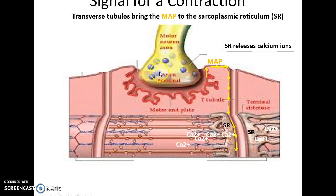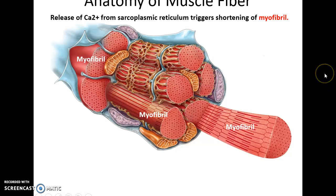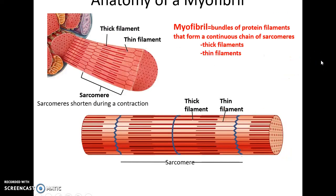The muscle action potential travels along the sarcolemma and eventually goes down the transverse tubules. When it reaches the triads, it abuts the sarcoplasmic reticulum, which detects this change in charge and releases its calcium ions into the sarcoplasm. This calcium release is critical because it triggers the myofibril shortening and the contraction of the muscle fiber.